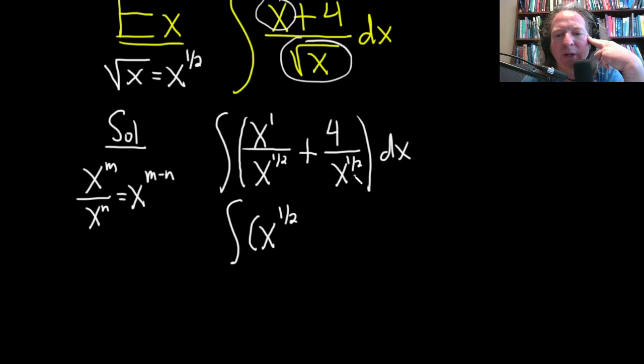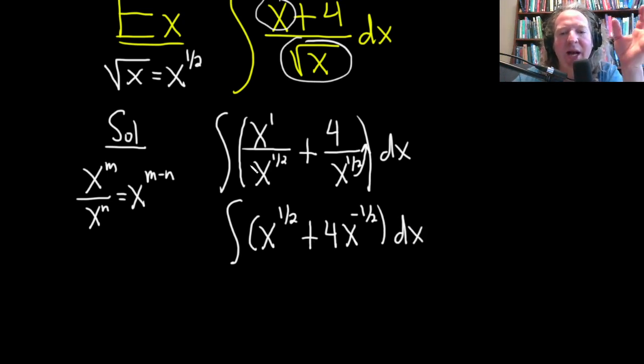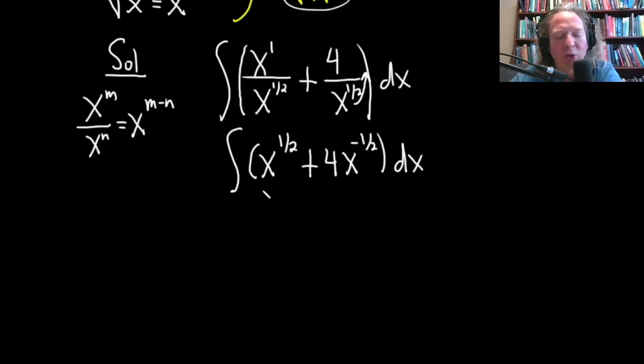So 1 minus 1 half is 1 half. And then here what we'll do is we'll bring this upstairs. And when we do that, we get 4x, so the exponent will become negative, so it'll be negative 1 half. And we've done these things because we want everything to be x to a power, so we can use the power rule.